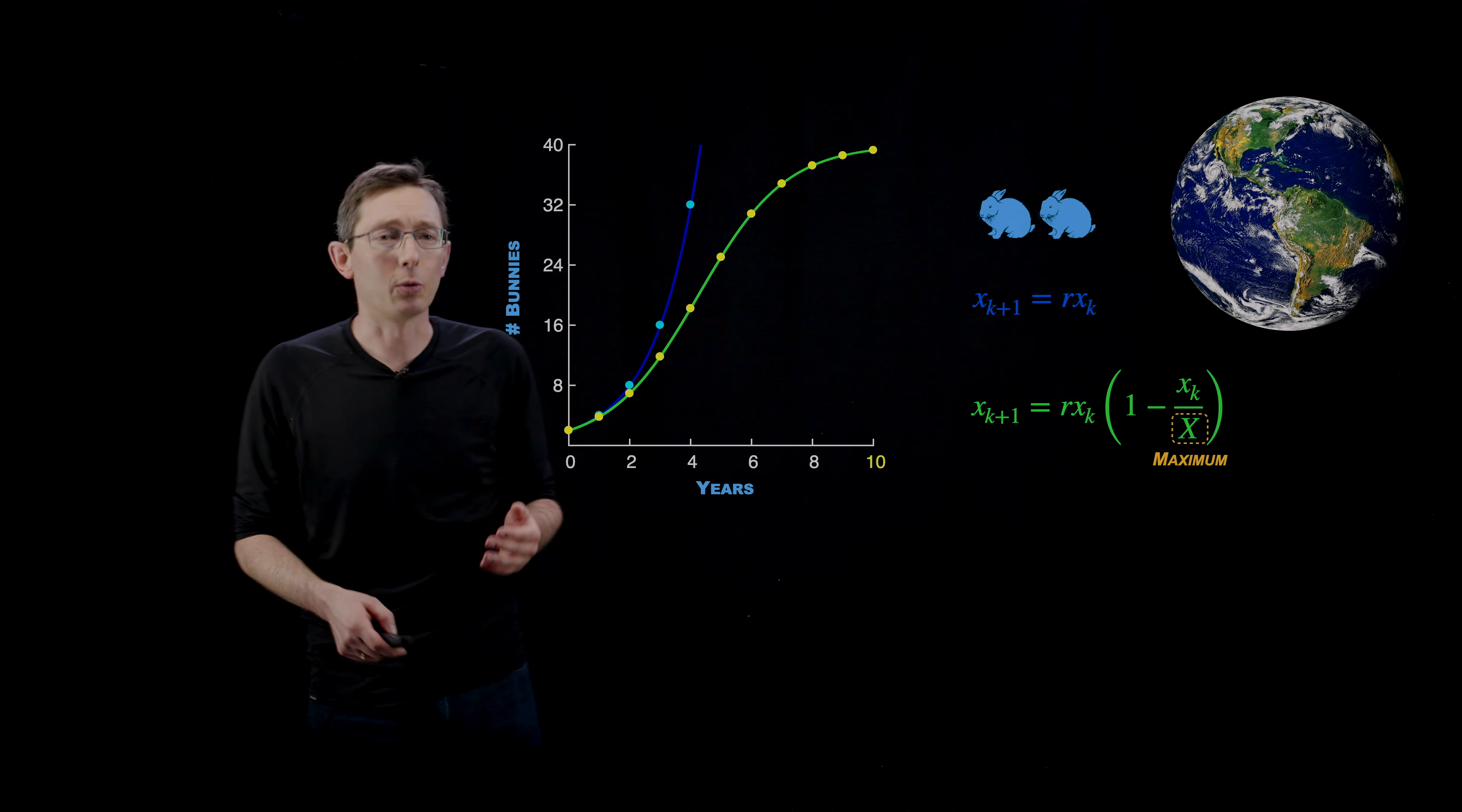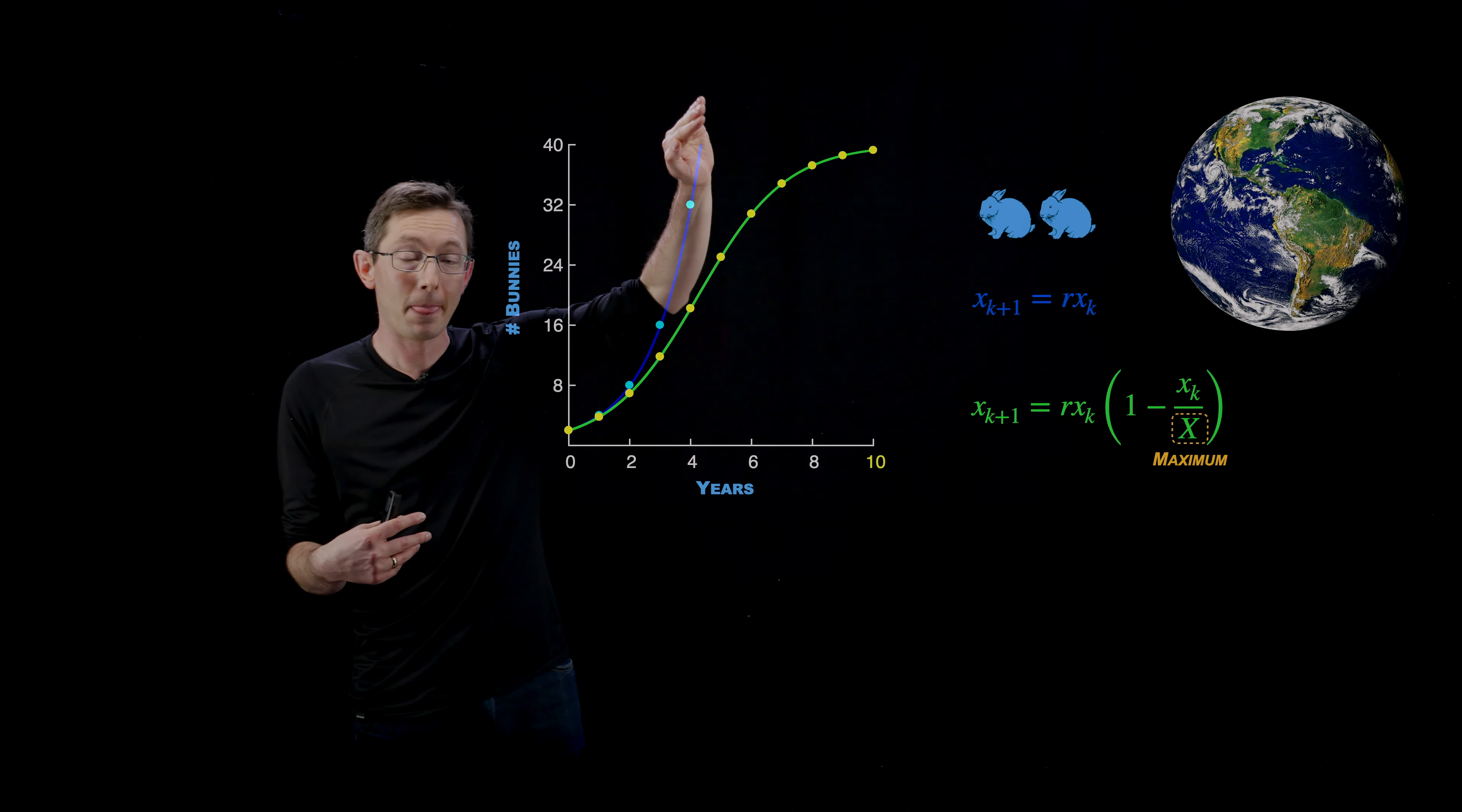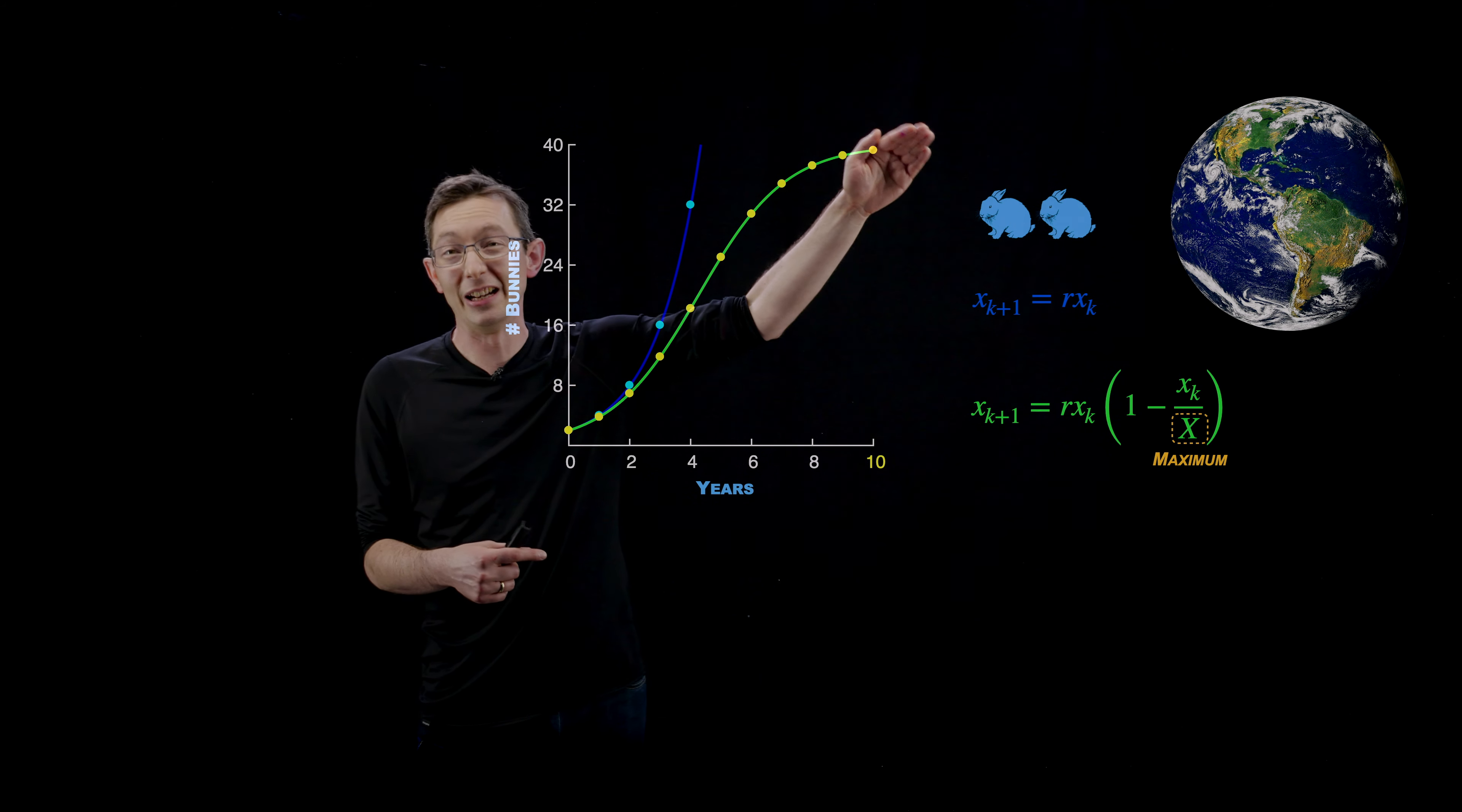So we're going to talk about systems that have exponential growth. We're going to talk about why it's called exponential growth. We're also going to look at why exponential growth always must end. So even though your bunny population would grow exponentially because we have a finite earth or a finite neighborhood or whatever, something is going to cause this exponential growth to eventually saturate.